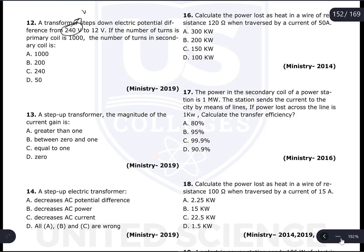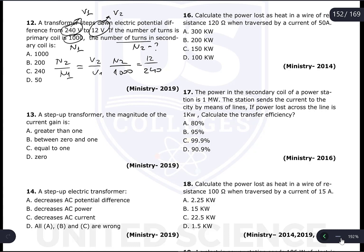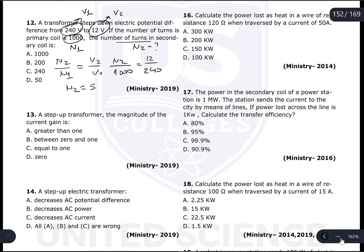Question 12: A transformer steps down from 240 volts (V1) to 12 volts (V2). If the primary coil has N1 = 1000 turns, what is N2? Using N2/N1 = V2/V1: N2 = 1000 × (12/240) = 1000 × 0.05 = 50 turns.